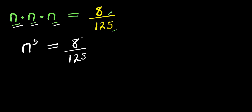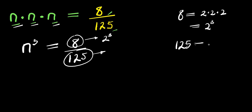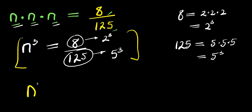Now, let's express 8 in terms of 2 so that the exponent will be 3. And also 125, let's express it in terms of 5 so that the exponent will be 3. So we have 8 equals 2 times 2 times 2, which is 2 to the power of 3. We replace 8 with 2³, and 125 equals 5 times 5 times 5, which is 5³. So we replace 125 with 5³. That means this equation simply becomes n³ equals 2³ divided by 5³.